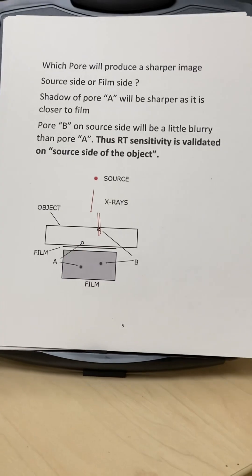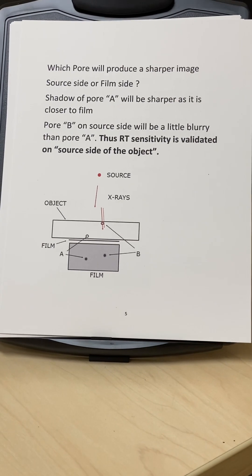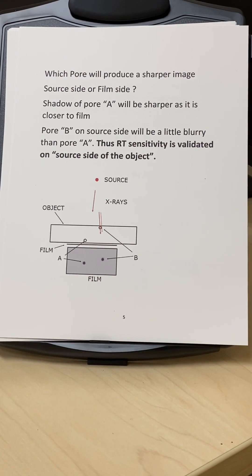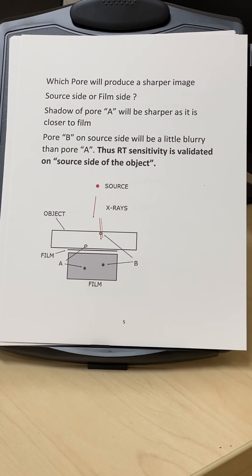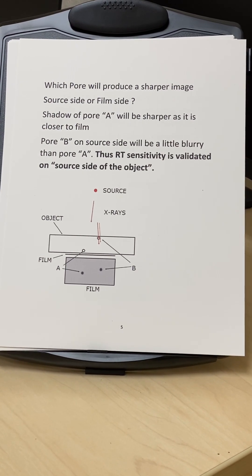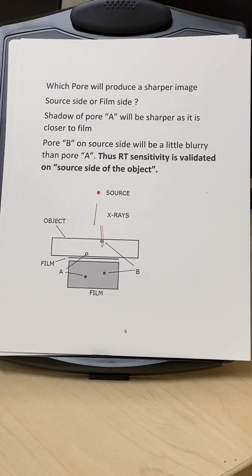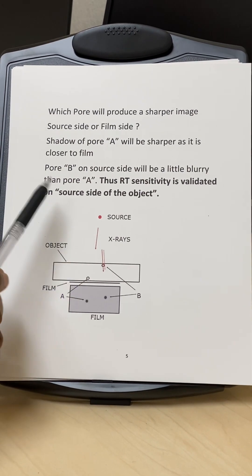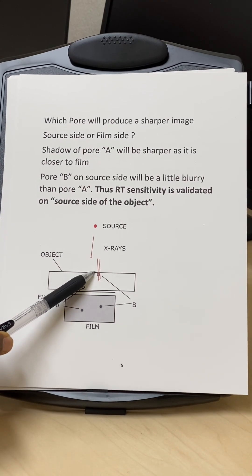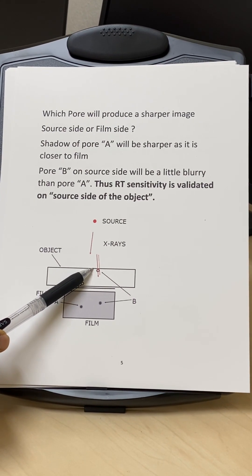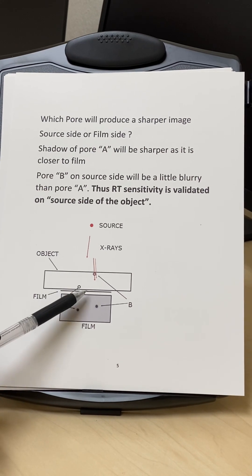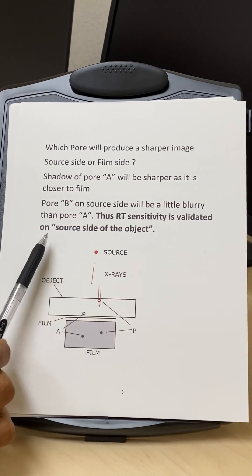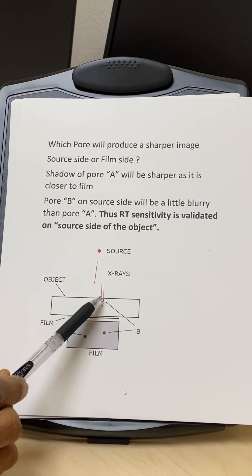This leads to the question of where to place the IQI when validating sensitivity. We should place the IQI at the worst location for detection. Given a choice between film side and source side, the IQI wires should be placed on the source side, because that is more challenging to detect than placing them on the film side. For RT, sensitivity is validated on the source side of the object.